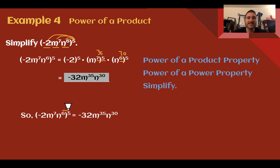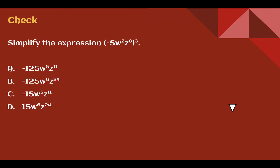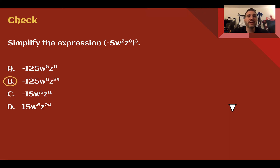Check your understanding: Simplify the given expression and choose the correct answer. Pause the video now and complete the check. You should have picked B: negative 125, w to the 6th, z to the 24th. 8 times 3 is 24, 2 times 3 is 6. Then we also apply it to the 5: 5 to the 3rd power is 125, and it's negative. So the answer is negative 125, w to the 6th, z to the 24th.